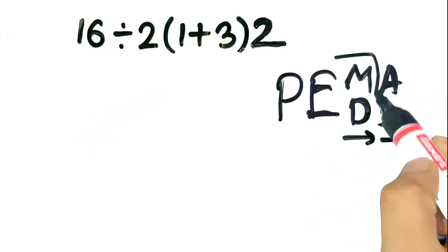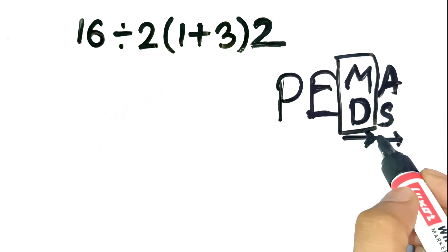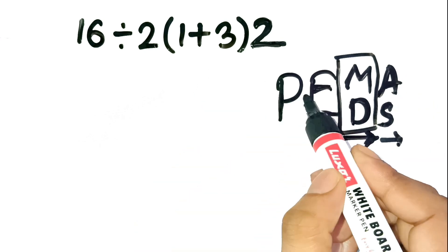Now here's the catch. Multiplication and division have equal priority. You don't always multiply first. You simply move left to right through them. Let's carefully go step by step.